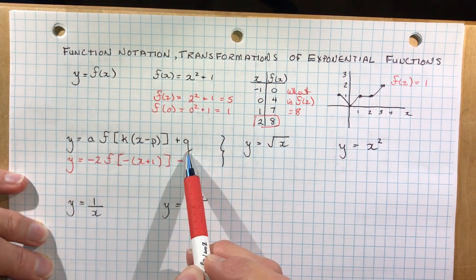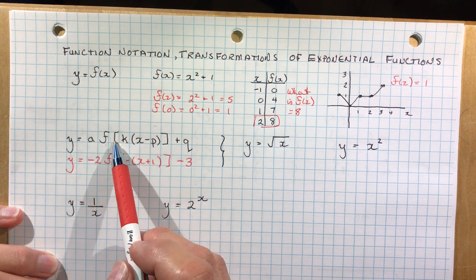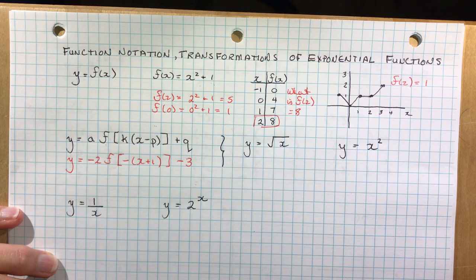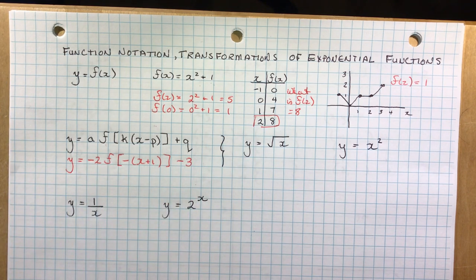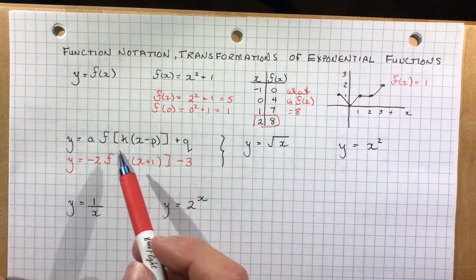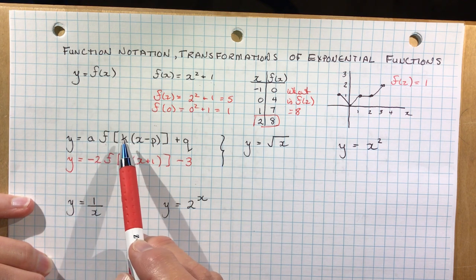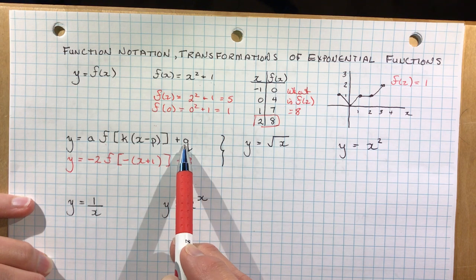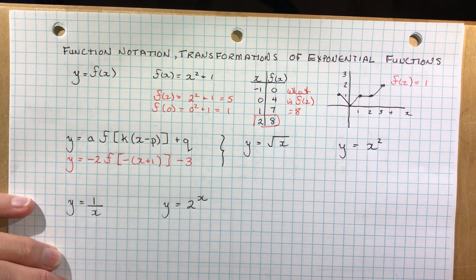So what happens with transformations? We're using function notation, and that's why they teach you function notation — so that they can make more sense of transformations for you. This function notation says I want you to apply all of these rules to this function, and this is what it's going to be. It's describing what the transformations are going to be for any given function. They can say apply this set of rules — vertical stretches and compressions, horizontal stretches and compressions, horizontal shifts left/right, vertical shifts up/down. I want you to apply this to the parent function, the root of x, and transform it using this rule.